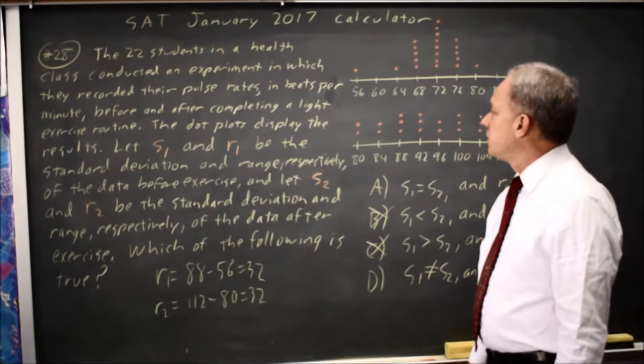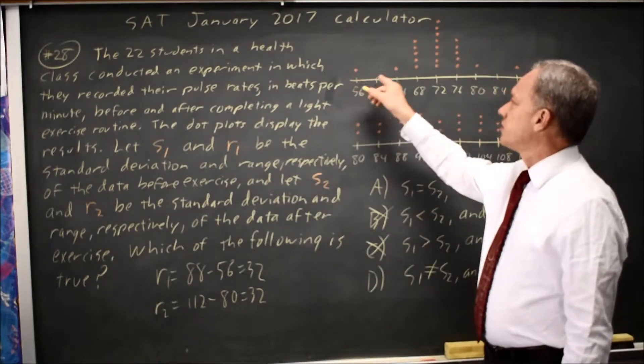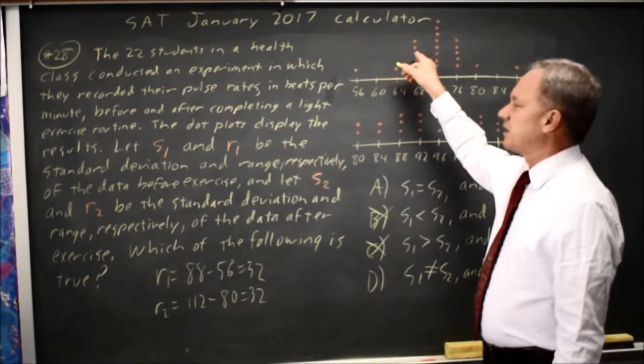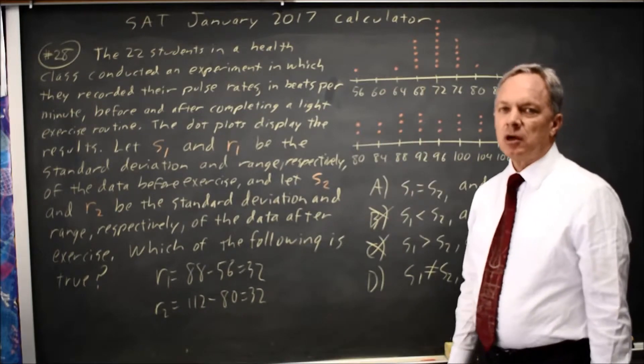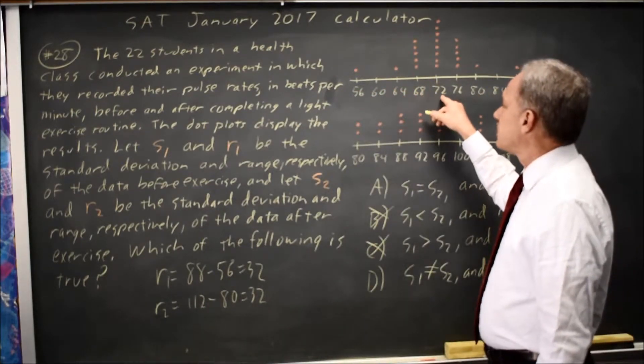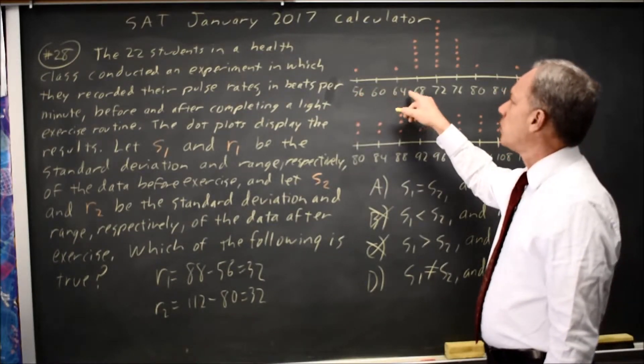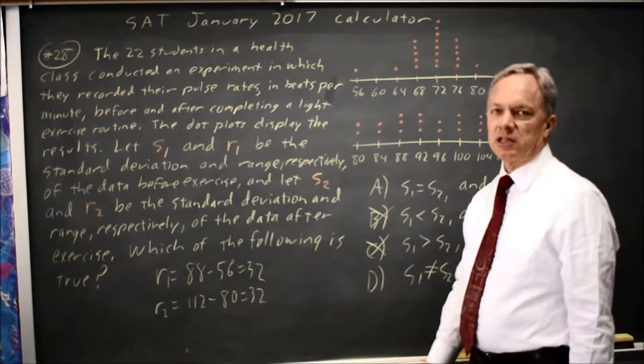Standard deviation, you can find on your calculator by either entering 56, 64, 68, and so on, or entering the unique values in list 1, and then the frequencies 1, 1, 5, 8, etc. in list 2.